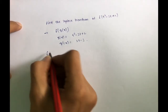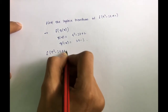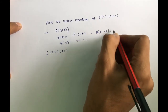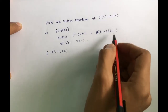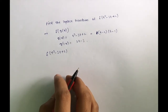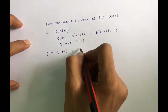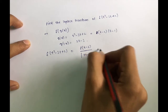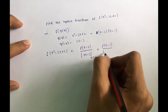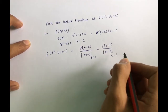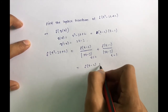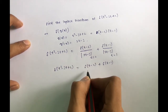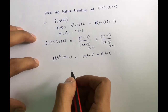We need to break δ(t² - 3t + 2) into two impulse functions. We factor t² - 3t + 2 as (t - 2)(t - 1). Applying the formula: δ(t² - 3t + 2) = δ(t - 2) / |2t - 3| at t = 2, plus δ(t - 1) / |2t - 3| at t = 1, giving δ(t - 2)/1 + δ(t - 1)/1 = δ(t - 2) + δ(t - 1).